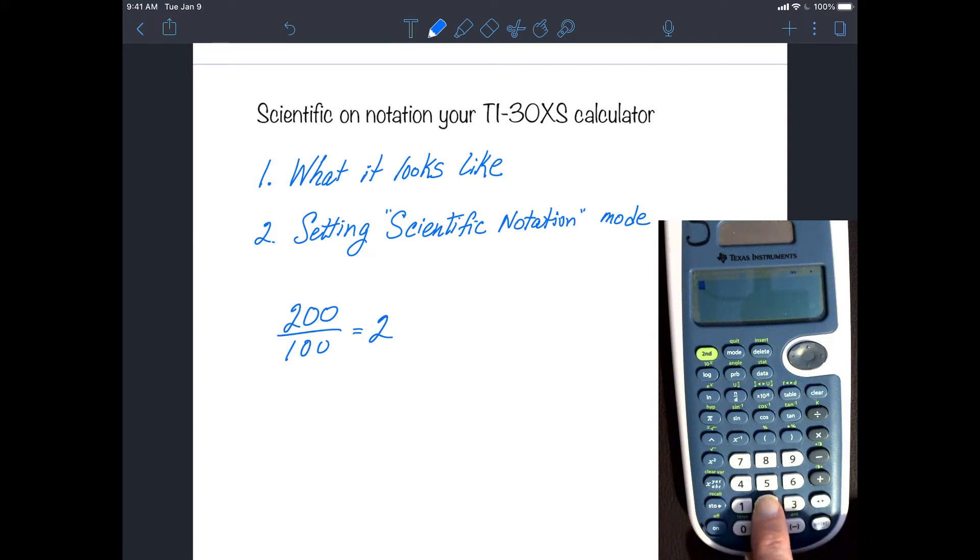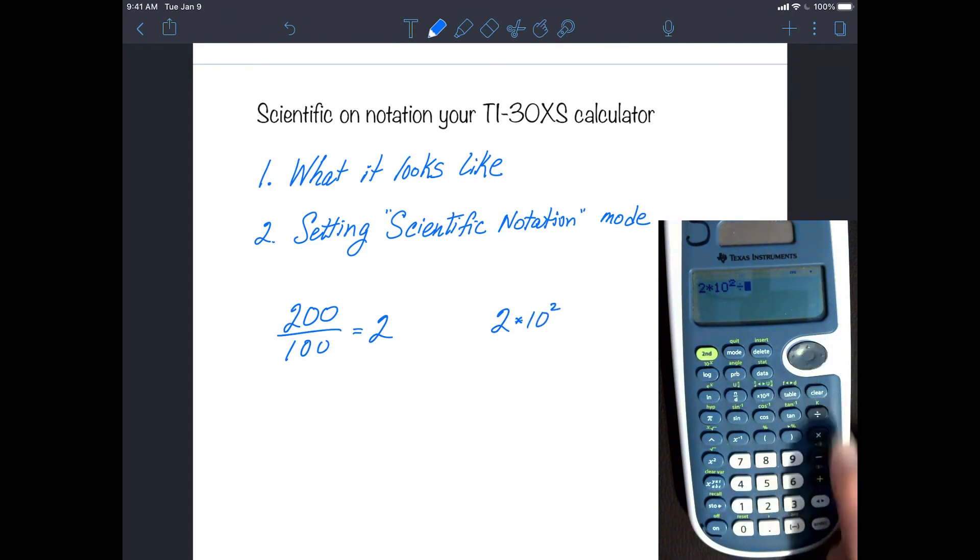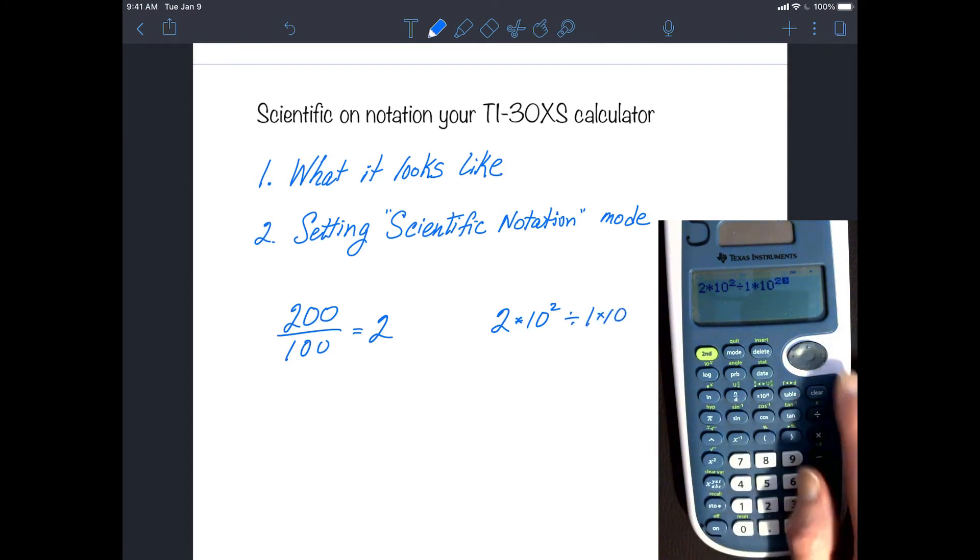200 in scientific notation is 2 times 10 to the 2nd, and we're going to divide that by 1 times 10 to the 2nd, which is 100. The answer should be 2, but your calculator shows 20,000. So what happened?